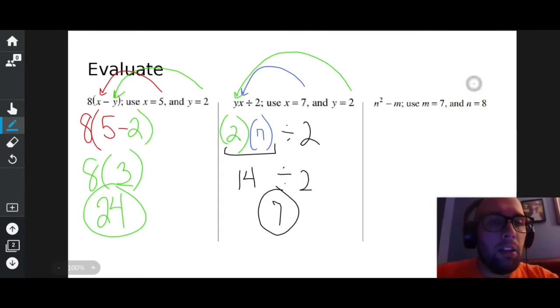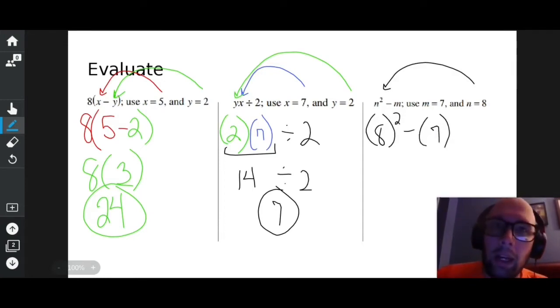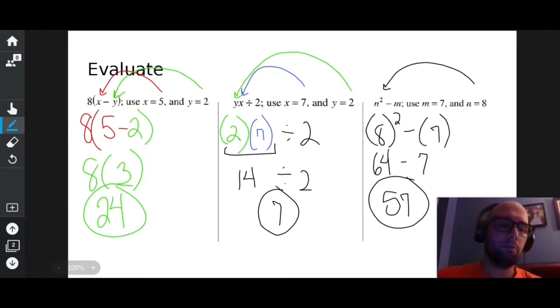n is eight. So I have eight squared minus m, which is seven. Eight squared is 64, the best video game system known to man. Minus seven is going to be 57. That's 42 problems short of how many Jay-Z had.